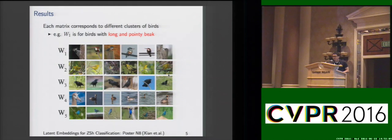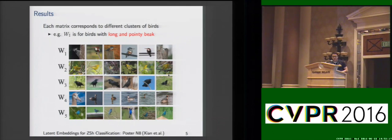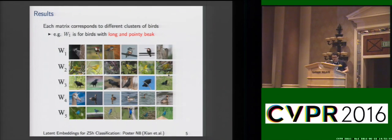We also got some very interesting qualitative results. In this figure, each row corresponds to the top-ranked images by each embedding matrix in our model. The qualitative results clearly demonstrate that different embedding matrices in our model indeed correspond to different clusters of birds with similar visual properties. For example, W1 corresponds to all the birds with long and pointy beak, and W2 is responsible for all the birds with yellow color and living in the forest.